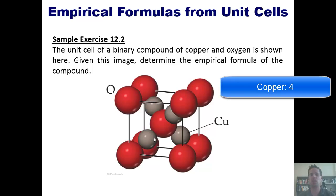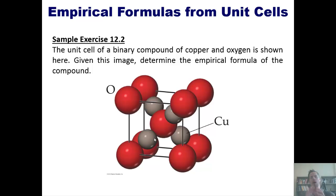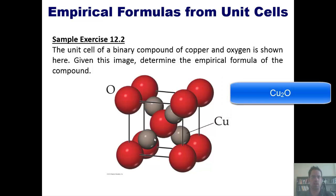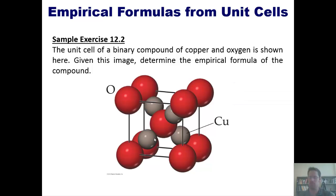I also have four individual coppers that are completely within the unit cell. So I've got a total empirical formula of copper 4O2. As we simplify that mathematically, it ends up coming to Cu2O. That is the correct empirical formula for this unit cell.